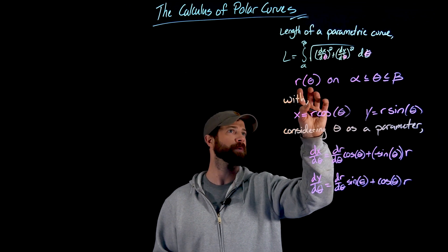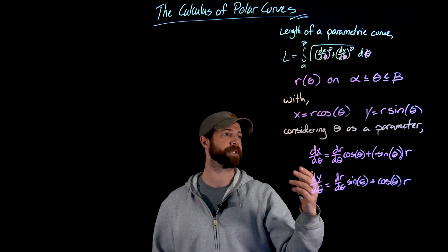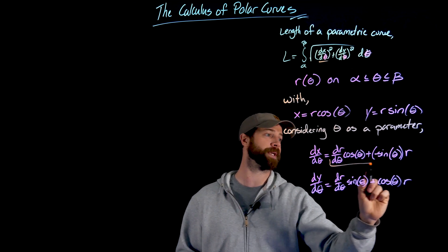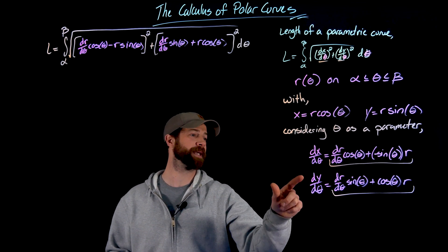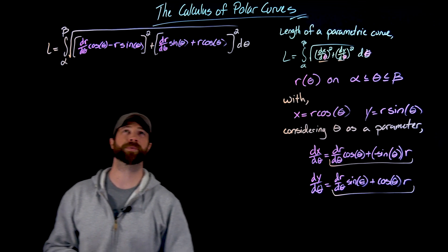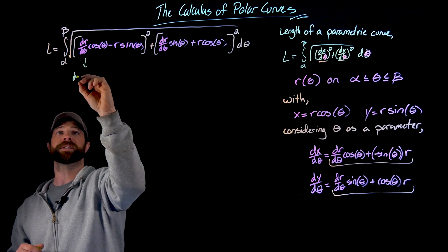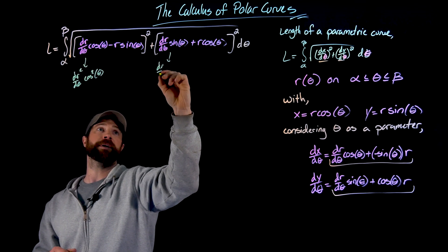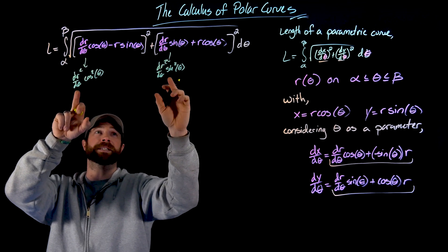Now I have expressions for both dx/dθ and dy/dθ. To find the arc length from alpha to beta, treating θ as a parameter, I plug these into the parametric arc length formula. I replace dx/dθ and dy/dθ with these expressions and multiply them out. The first term gives (dr/dθ)²·cos²θ, and from the second we get (dr/dθ)²·sin²θ.